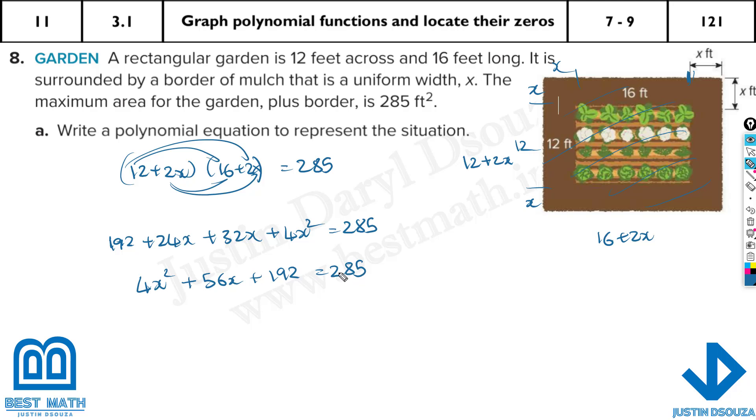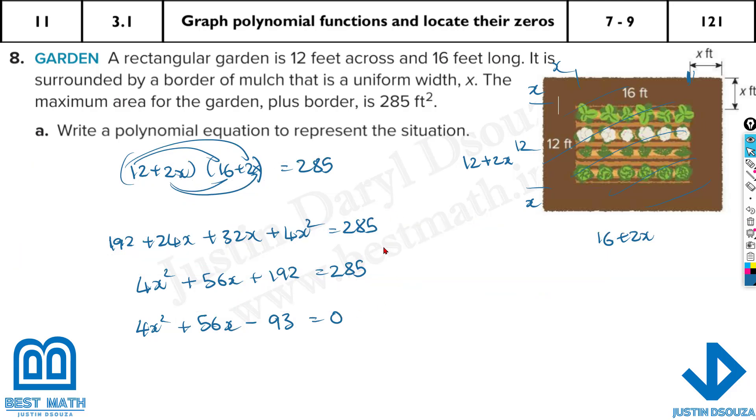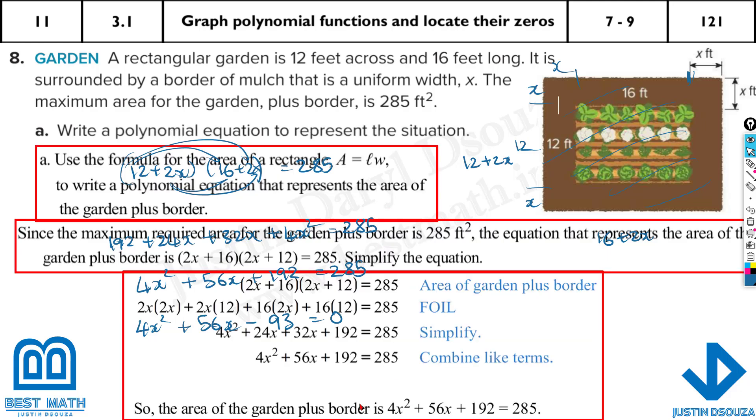We can simplify it further. Let's write the x term first. 4x², the highest degree term. Then the x term, that is 32 + 24 = 56x + 192 = 285. But in order to solve, we have to have the right side equal to 0. So it's 4x² + 56x minus, we need to subtract 192 from 285, so that's 93 = 0. So that must be the answer.